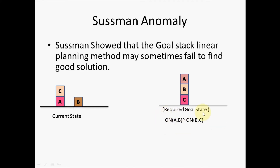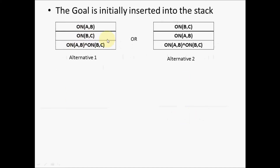The goal — on(A,B) and on(B,C) — is first loaded onto the stack, and then each of these predicates has to be individually placed on top. The order is not important, therefore there are two alternatives initially. In the first alternative, after the entire goal predicate has been inserted into the stack, we insert on(B,C) first and then on(A,B) on top of it.